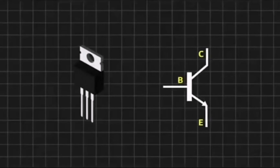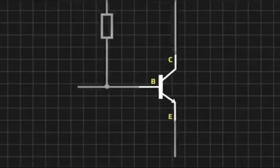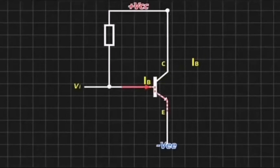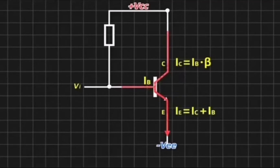How does the transistor amplify the signal? The current flowing in is multiplied by β. β is equal to the collector current divided by the base current, which is equal to the emitter current. So when the current signal enters the base, it can control the current of the collector route.